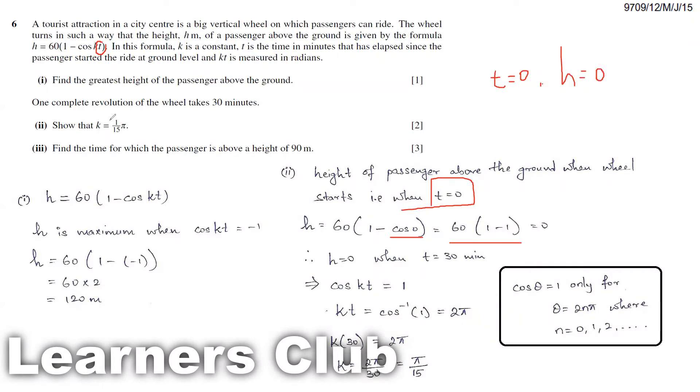When the person finishes one revolution, that means at 30 minutes, again the person will be zero meters above the ground. We need to find the value of k when the height will be zero again. After completing one revolution, the height will be zero. So when we will get our height to be zero, cos kt equals 1, because when cos kt is 1, 1 minus 1 will give us zero. When t equals 30 minutes our height will be zero. That will occur only when cos kt equals 1.